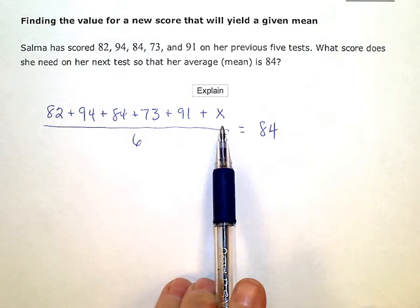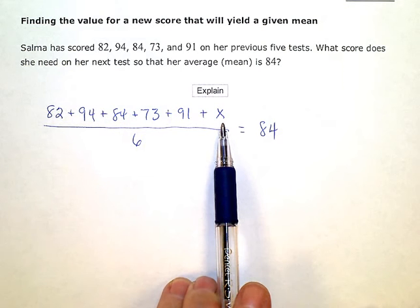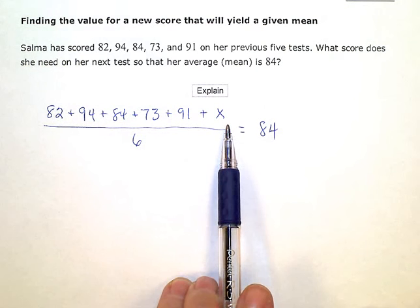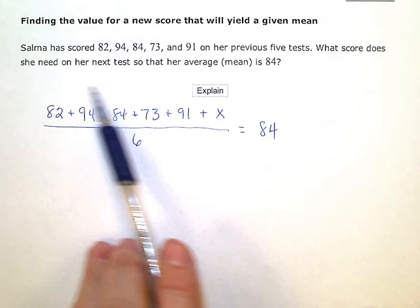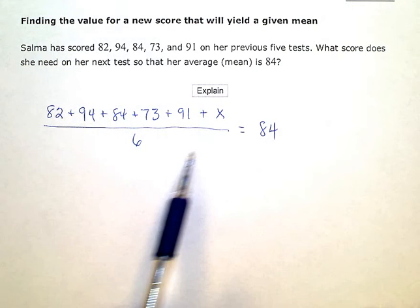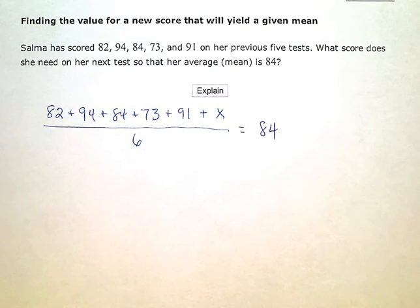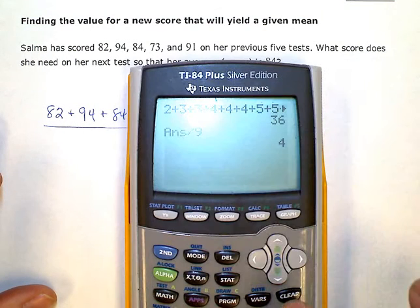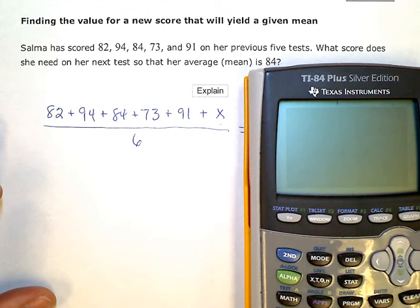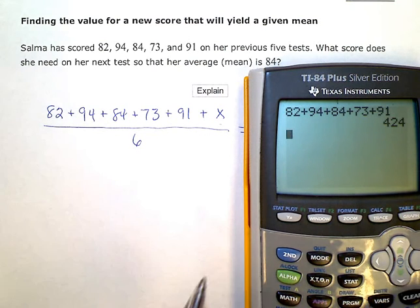Now I'm just going to solve for X. So the first thing I need to do is kind of try to simplify this big fraction here a little bit. So I'm going to go ahead and just add all of those numbers together. So 82 plus 94 plus 84 plus 73 plus 91. So that gives me 424.